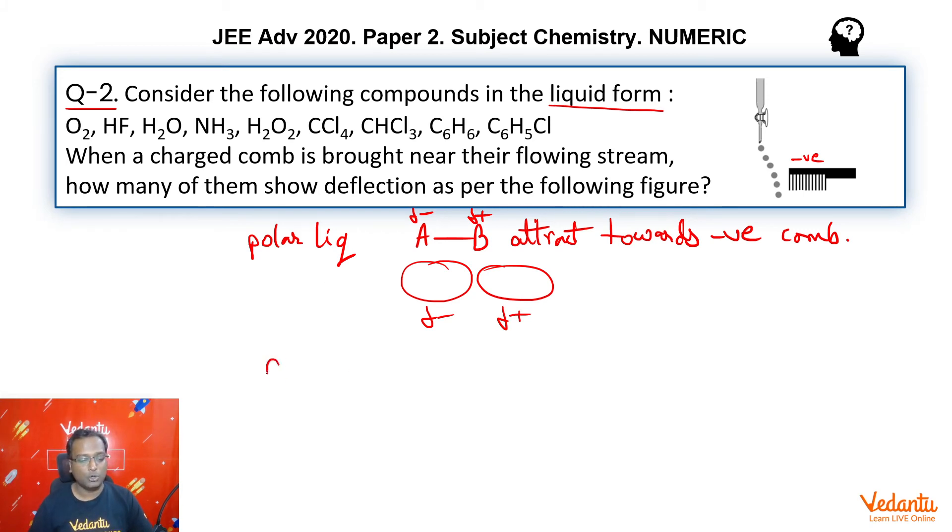First option, O2—that will be non-polar. Second option, HF—that will definitely be polar due to high electronegativity difference. Third option, water molecule—we know that it is polar. Next ammonia—ammonia is also a polar molecule.